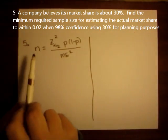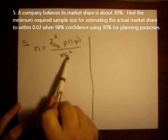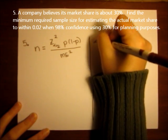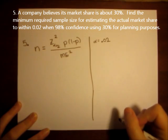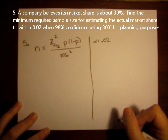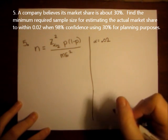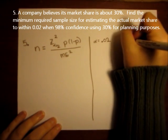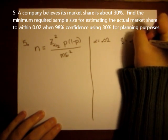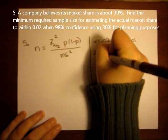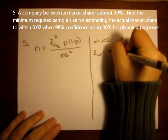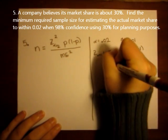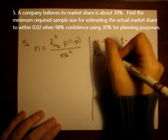So it looks like we need to solve for z alpha over 2, the margin of error, and p. First I'll start with z alpha over 2. Alpha is how not confident I am. In a 98% confidence interval, I am 2% not confident. That means my alpha over 2 is .01. And then z.01 is inverse norm of 1 minus .01, which is 2.326.